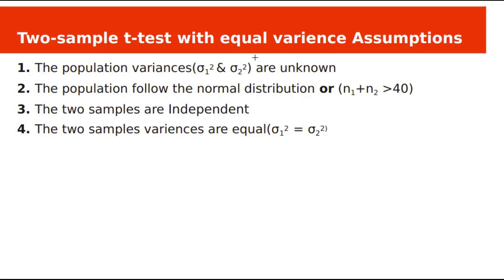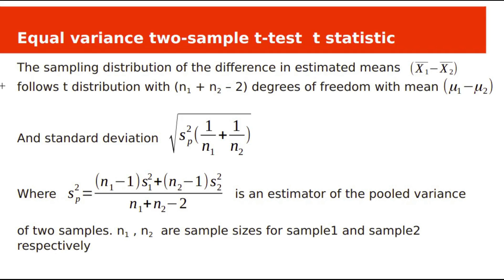For the equal variance two sample t-test, the assumptions are: population variances sigma1 and sigma2 are unknown; populations follow normal distribution or sample size n1 plus n2 is greater than 40 (any one is sufficient); the two samples are independent; and the two population variances are assumed equal, sigma1-squared equal to sigma2-squared. The sampling distribution of the difference in sample means x1-bar minus x2-bar follows a t-distribution with n1 plus n2 minus 2 degrees of freedom.